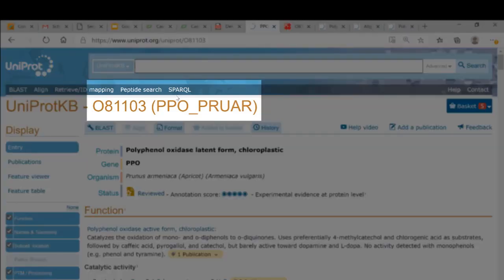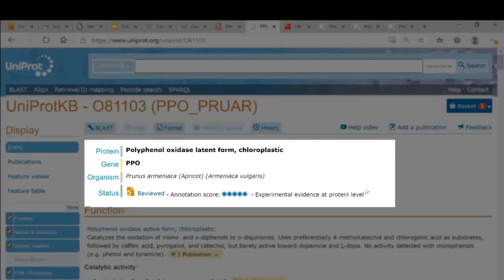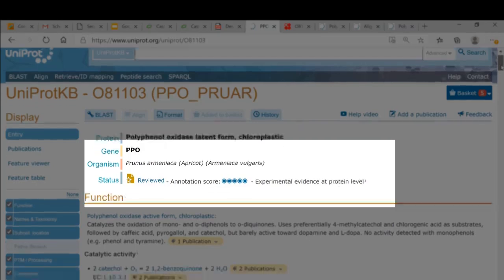So PPO from the apricot, also known as Prunus Armeniaca. Since this PPO enzyme was characterized in detail, you can see the status of this entry is reviewed. So it's a high quality entry in this database.